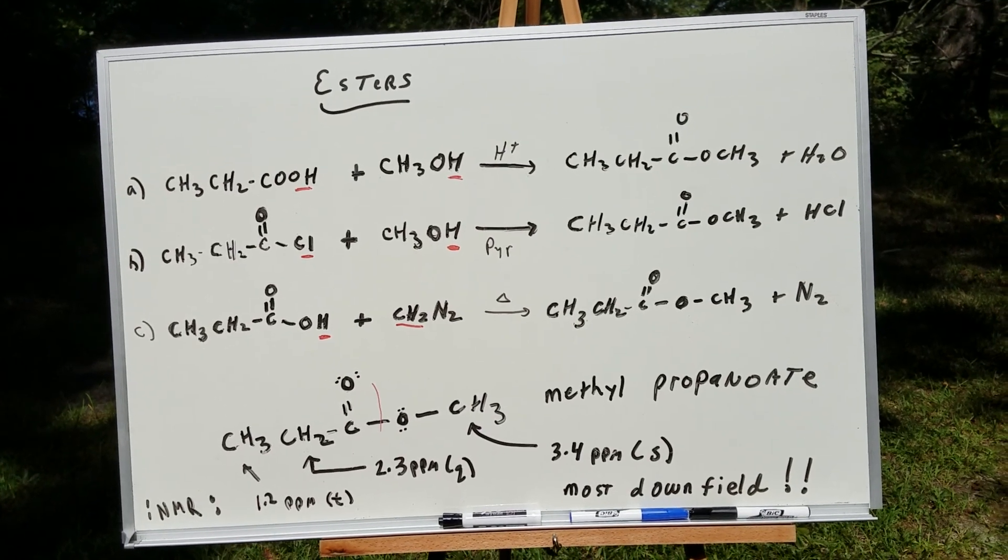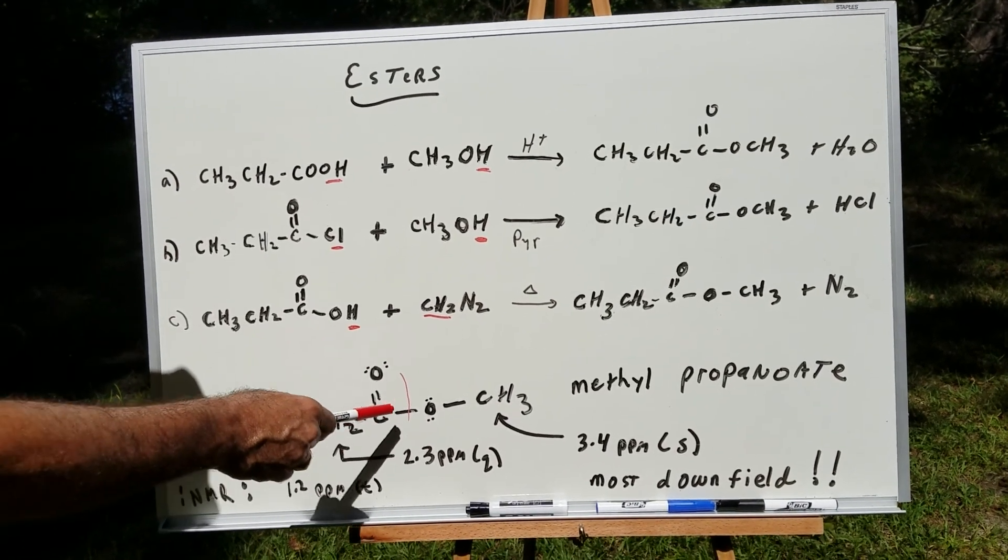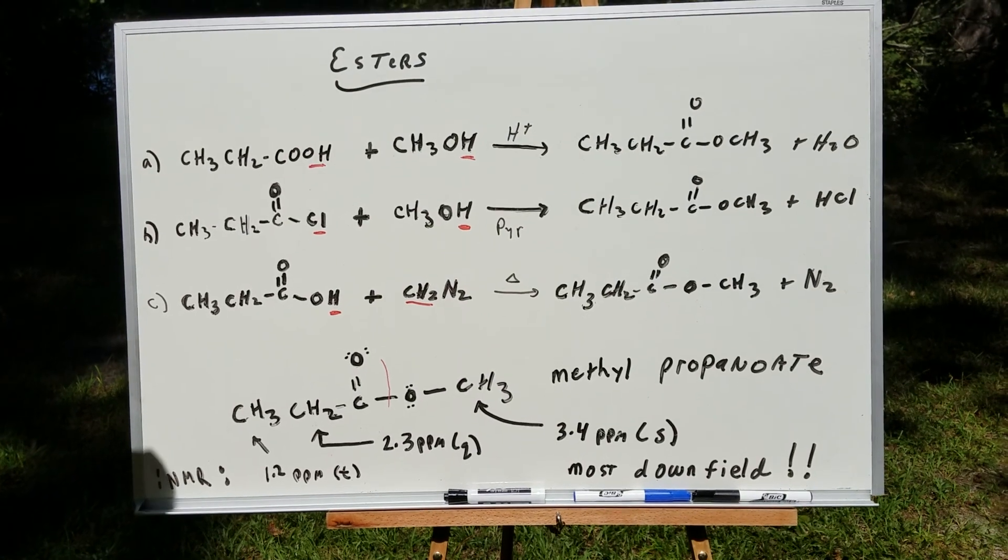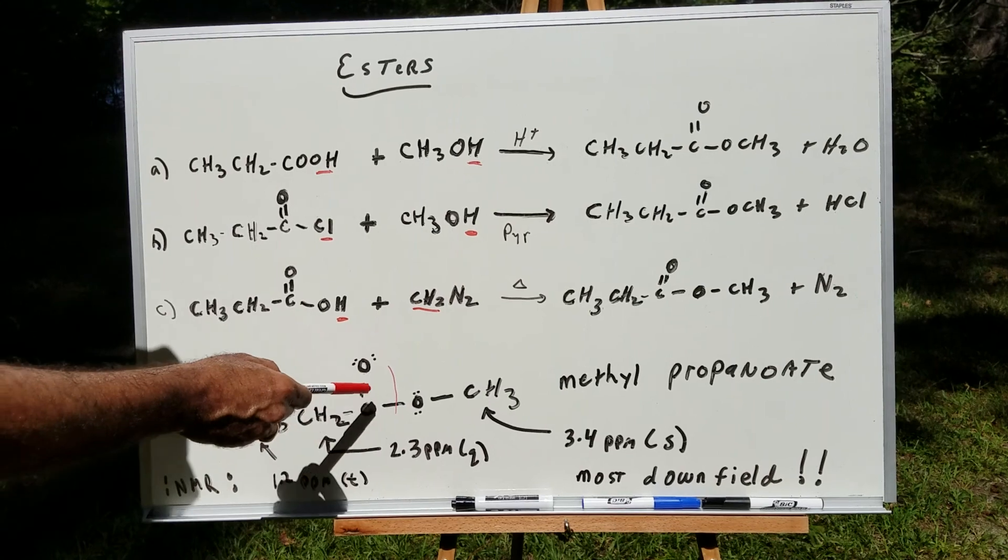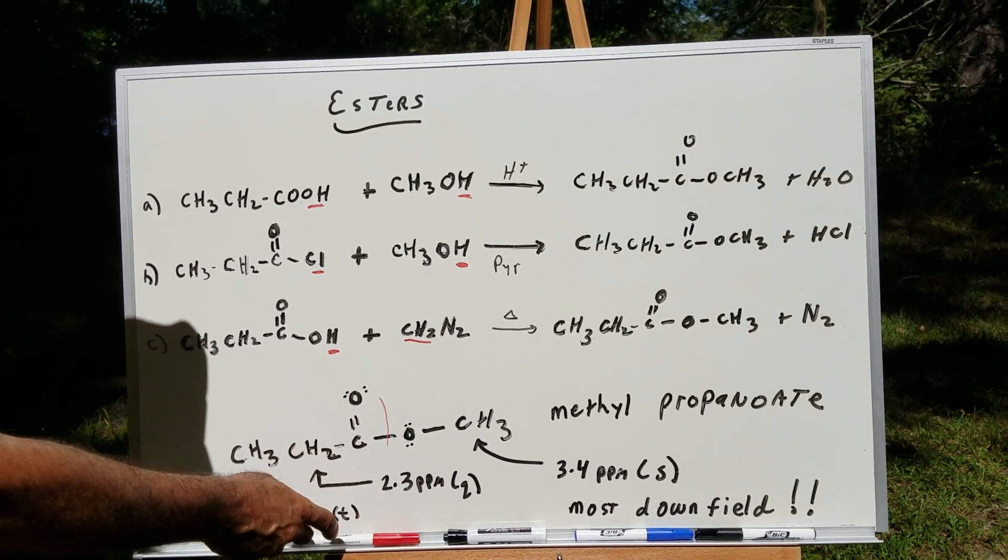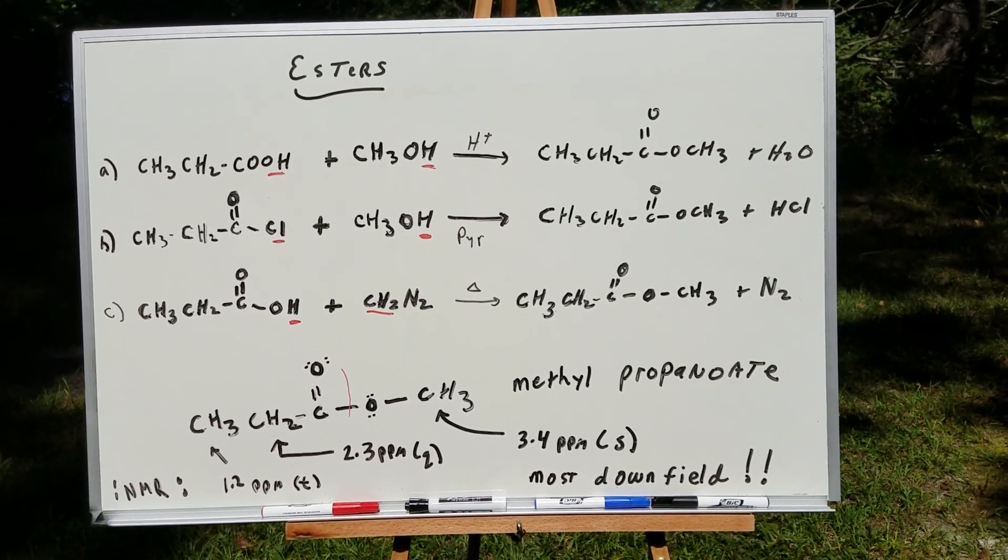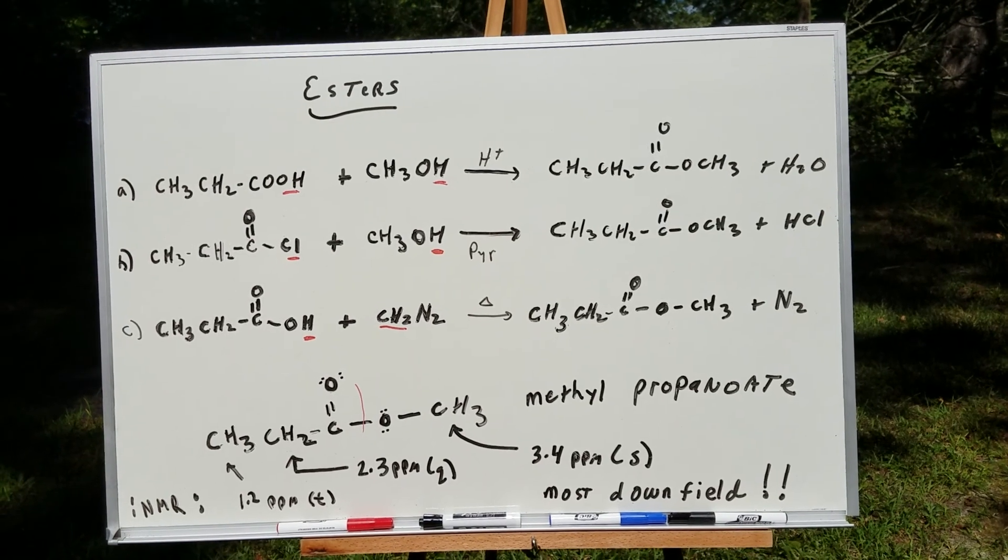If I did a carbon-13 analysis, since there's four different carbons, I would get four different carbon-13 signals. And finally, if I did an IR spectra on it, I would see the carbonyl group come in around 1720, 1730 in that ballpark.